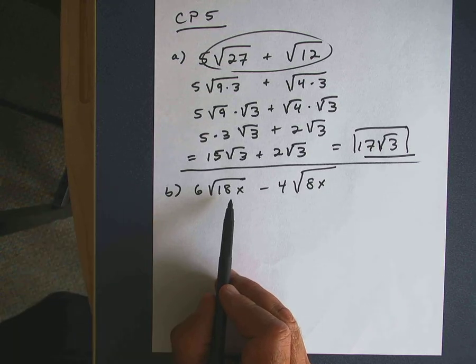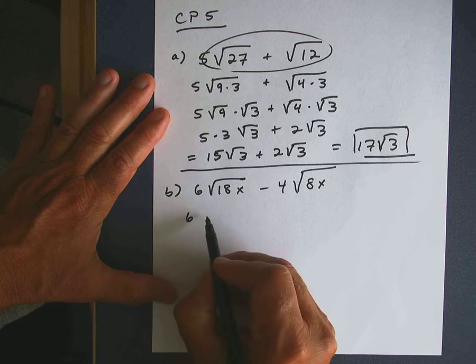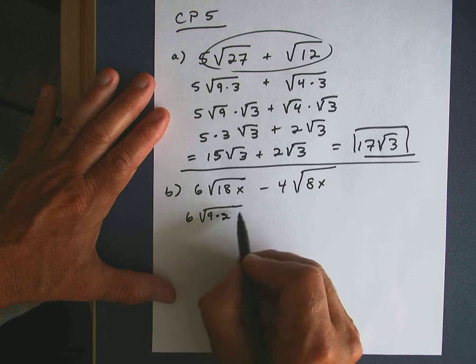18 has a factor that we can take the square root of, and that number is 9. So let's write this as 6 times the square root of 9 times 2. 9 times 2 is 18. We still have the x under here.